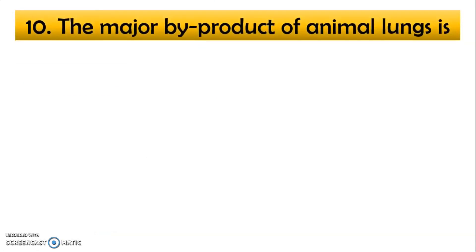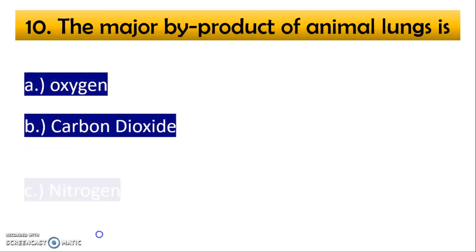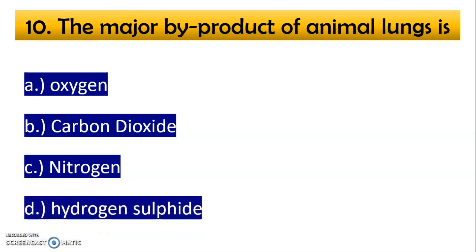Now last question, the major byproduct of the animal lung is? A option oxygen, B option carbon dioxide, C option nitrogen and D option hydrogen sulfide. And the correct option is option number C, nitrogen.